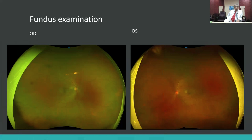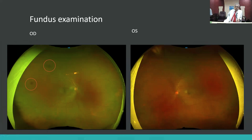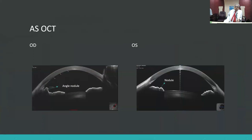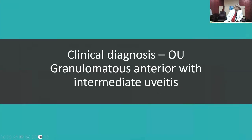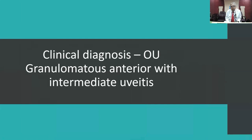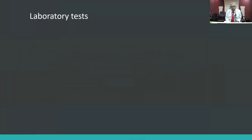On fundus examination, media in the right eye was hazy with vitreous opacities in the mid-periphery; disc and macula were normal. The left eye had no vitreous haze with normal disc and macula. Anterior segment OCT showed angular nodules in the right eye and small iris nodules in the left eye. Based on history and examination, a morphological diagnosis of granulomatous anterior uveitis with intermediate uveitis was formed.